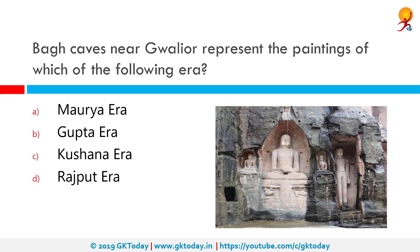Baag caves near Goliath represent the paintings of which era? The correct answer is the Gupta era. The Baag caves are a group of nine rock-cut monuments situated among the southern slopes of the Vindhyas in Baag town of Dhar district in Madhya Pradesh, central India. They are renowned for mural paintings by master painters of ancient India and are a source of information on the Gupta era.